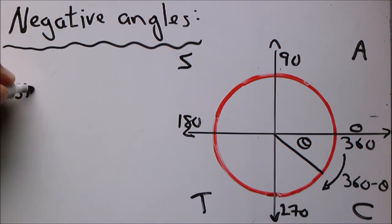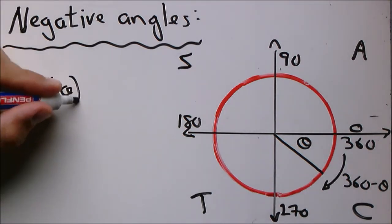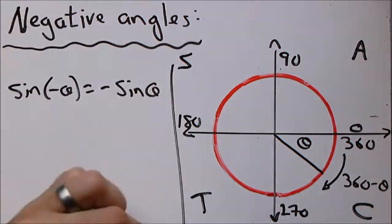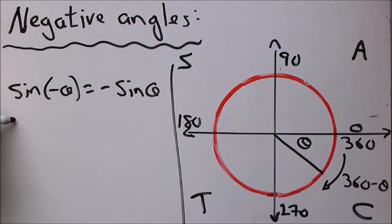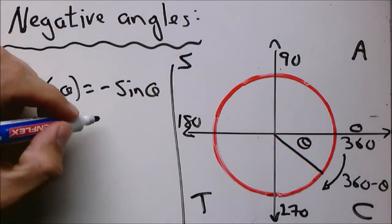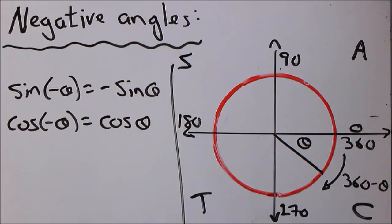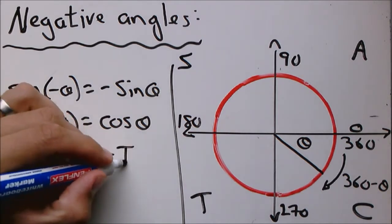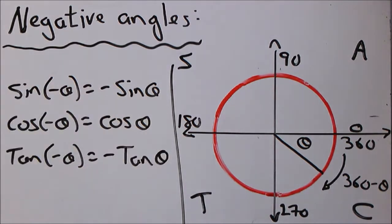So in summary: sin of negative theta equals negative sin theta, cos of negative theta equals cos theta, tan of negative theta equals negative tan theta.